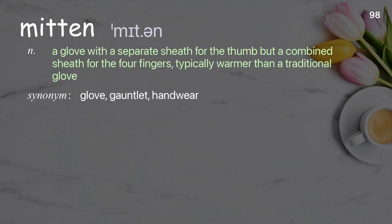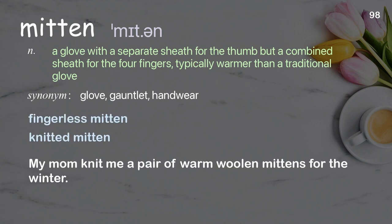Mitten: A glove with a separate sheath for the thumb but a combined sheath for the four fingers, typically warmer than a traditional glove. Examples: Fingerless mitten. Knitted mitten. My mom knit me a pair of warm woolen mittens for the winter.